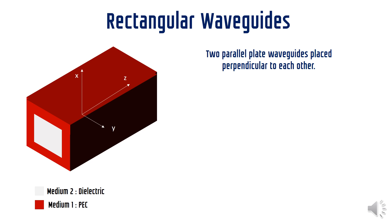We have talked about parallel plate waveguides so far. Rectangular waveguides can be thought of as two parallel plate waveguides aligned perpendicular to each other. The distances between the parallel plates need not be same.